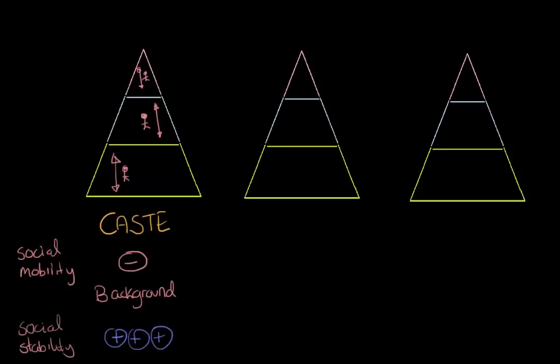The most common historic example of the caste system was the Hindu caste system, which was historically outlawed, but some say still practiced to some degree informally today.